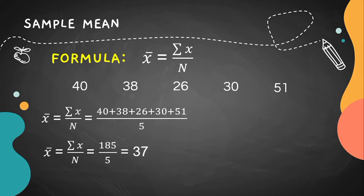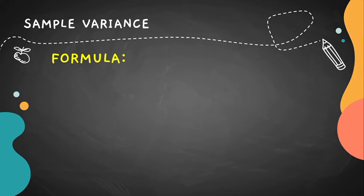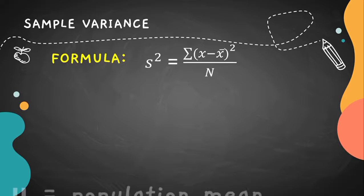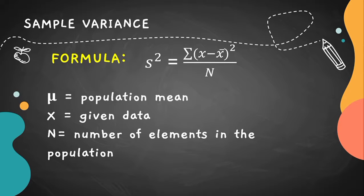Our sample mean here is 37. In order to compute the sample variance, we're going to use the formula: S squared is equal to the summation of X minus X-bar, or the sample mean, quantity squared, all over N.